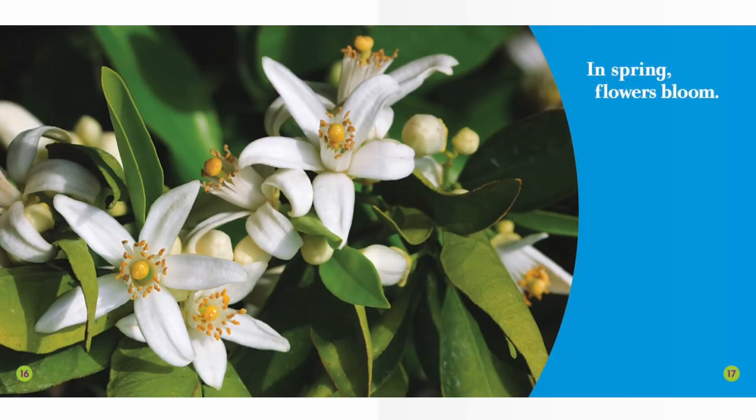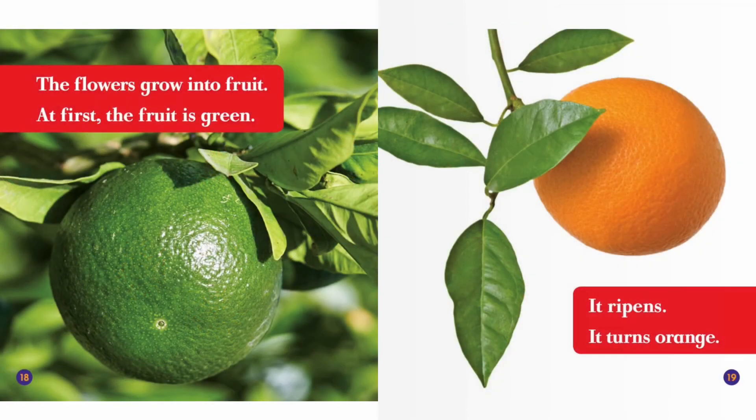In spring, flowers bloom. The flowers grow into fruit. At first, the fruit is green. It ripens. It turns orange.